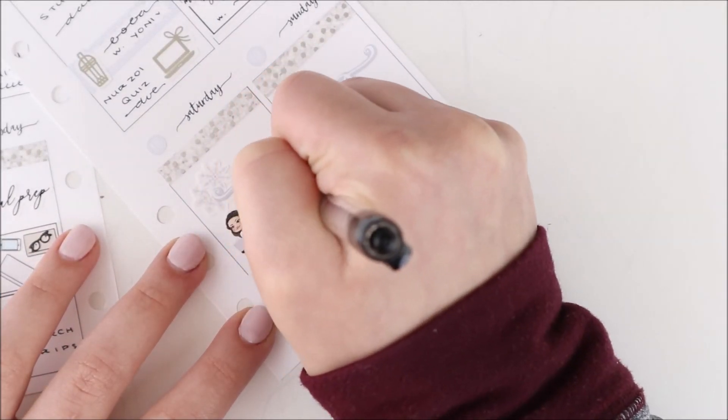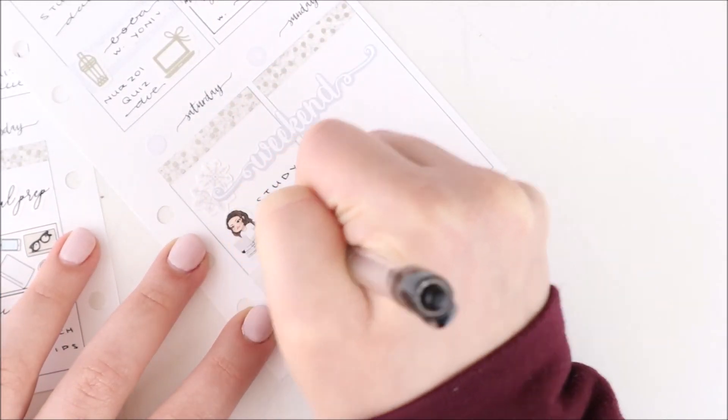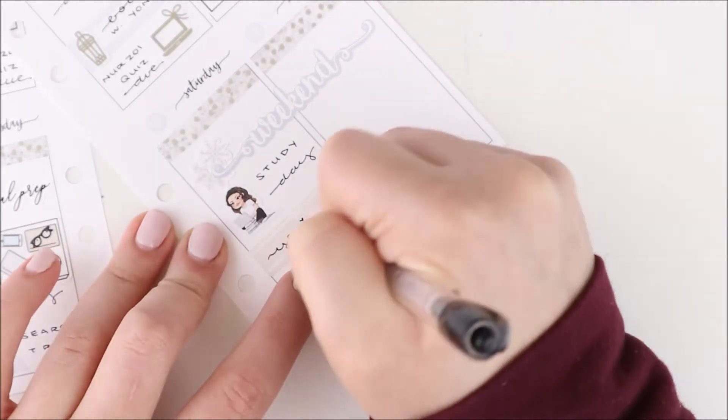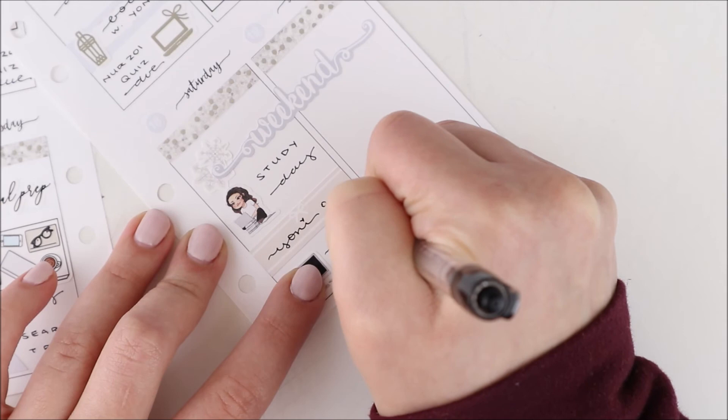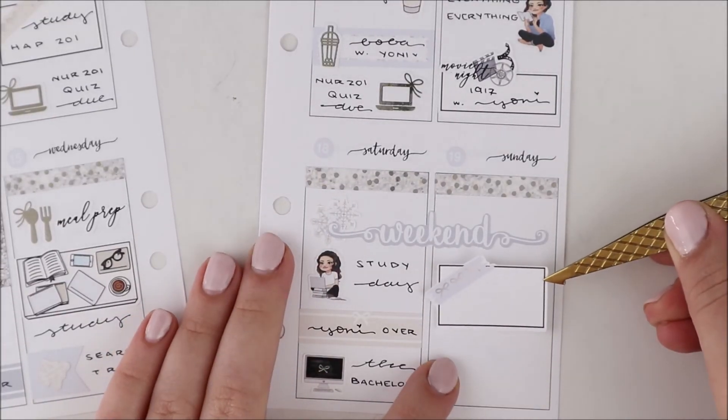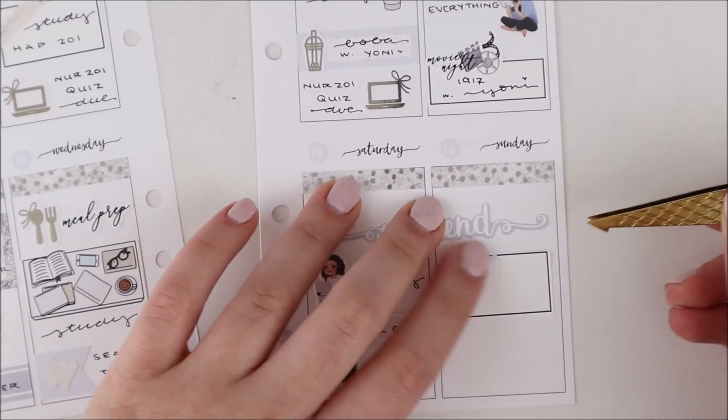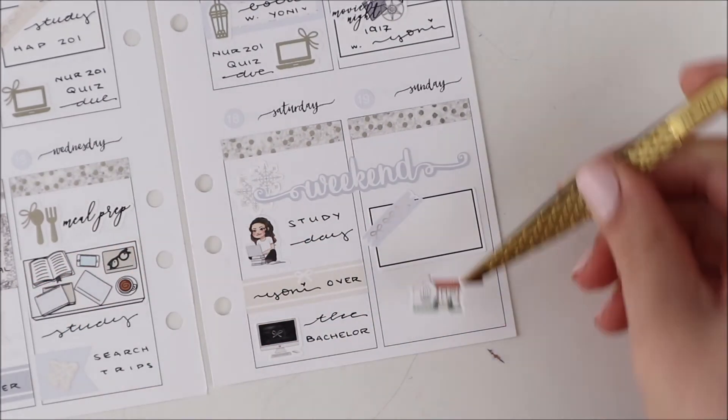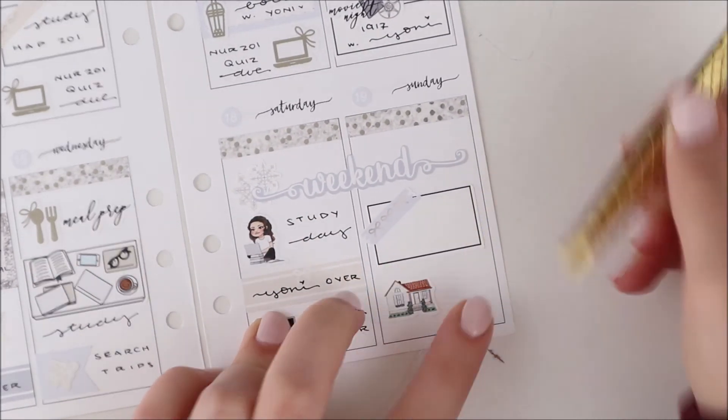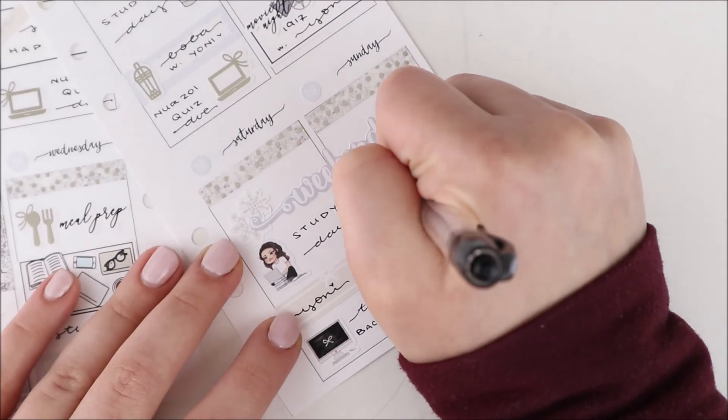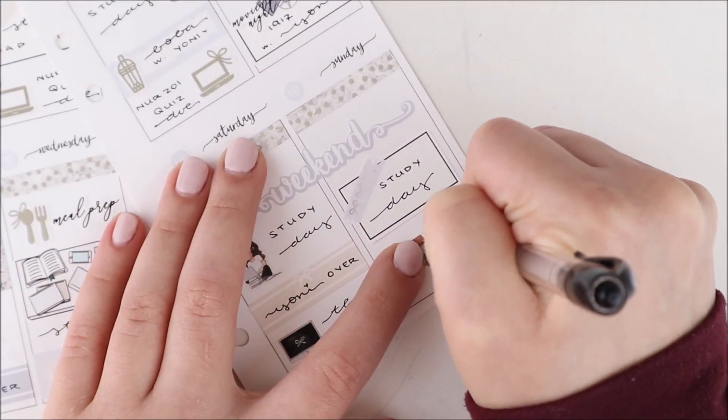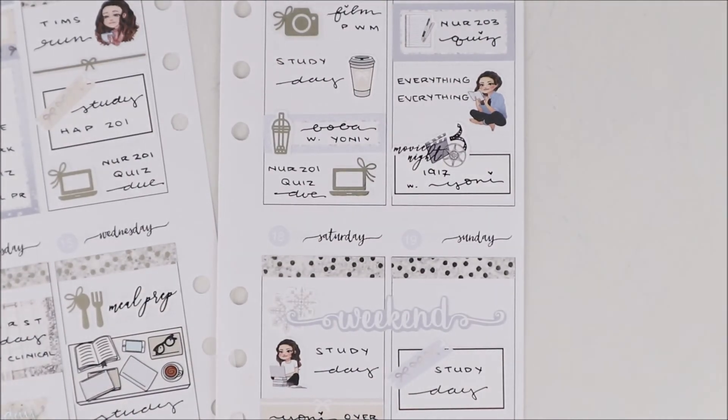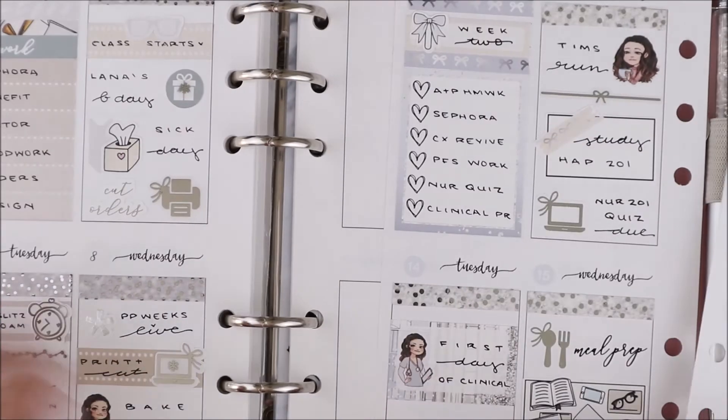Saturday I did a bunch of studying so I used an ava for that. I also wrote down that Yanni came over with a little bow label from the kit. Then I started watching The Bachelor this night. I wasn't going to watch it, I haven't watched The Bachelor or The Bachelorette in so long. I pretty much only watch Bachelor in Paradise but I don't know, I just started it and now I'm obsessed. That laptop sticker is from the kit.